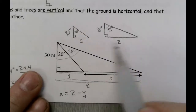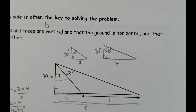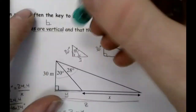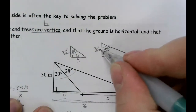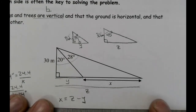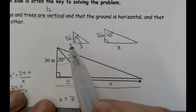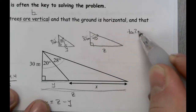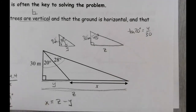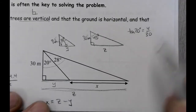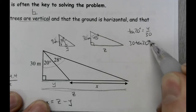So as long as I get those two pieces, I'm good. For y: my reference angle is 20 degrees, y is opposite, and 30 meters is adjacent. So tangent of 20 degrees equals y over 30. The 30 is in the denominator, so I multiply up: y equals 30 multiplied by the tangent of 20 degrees.